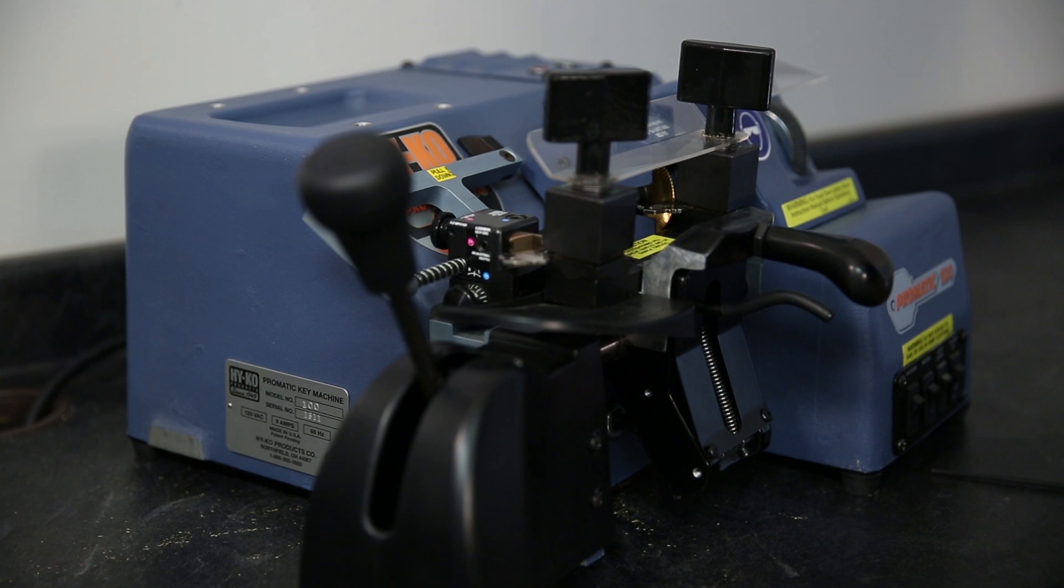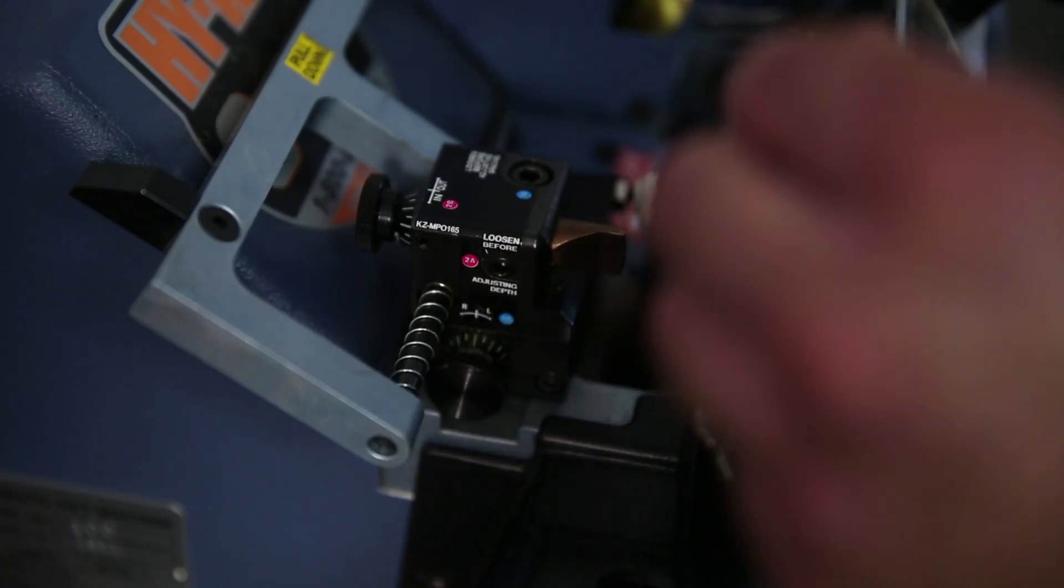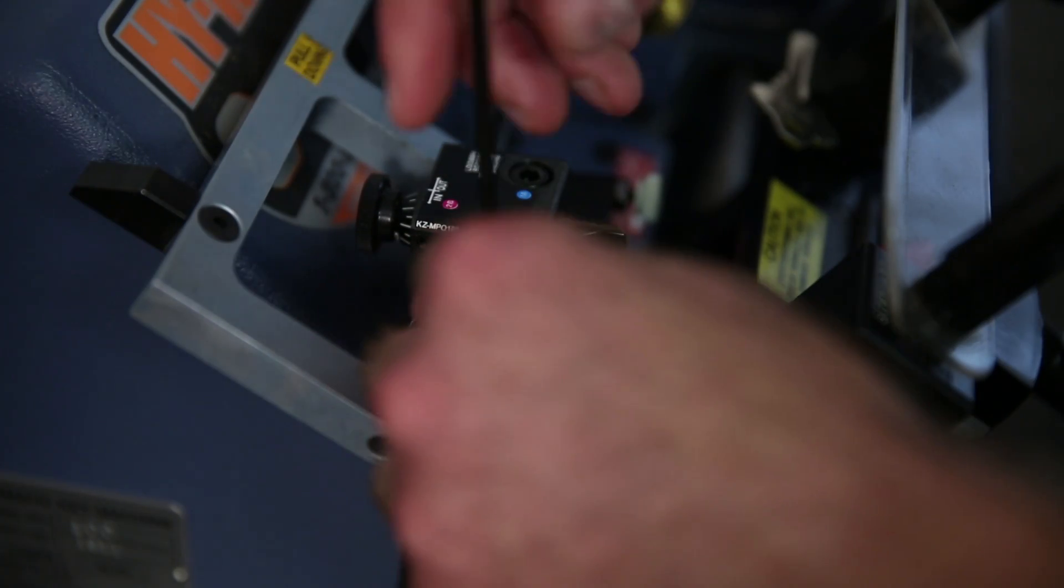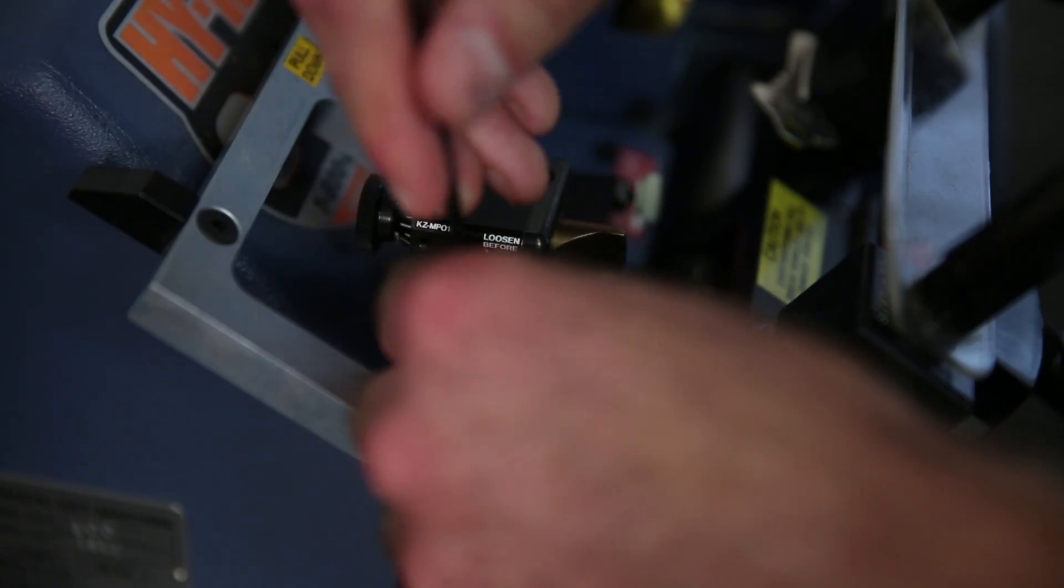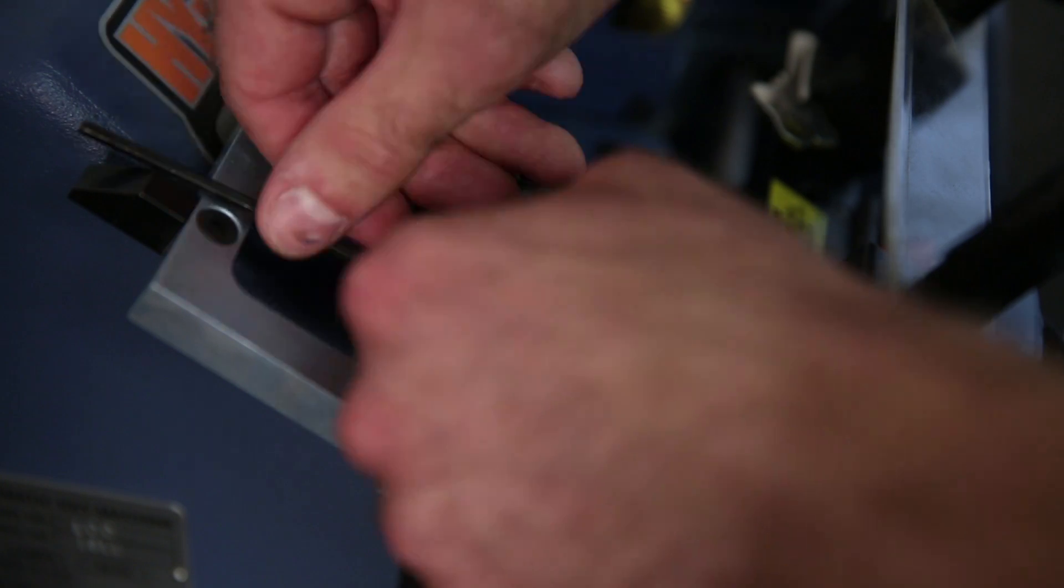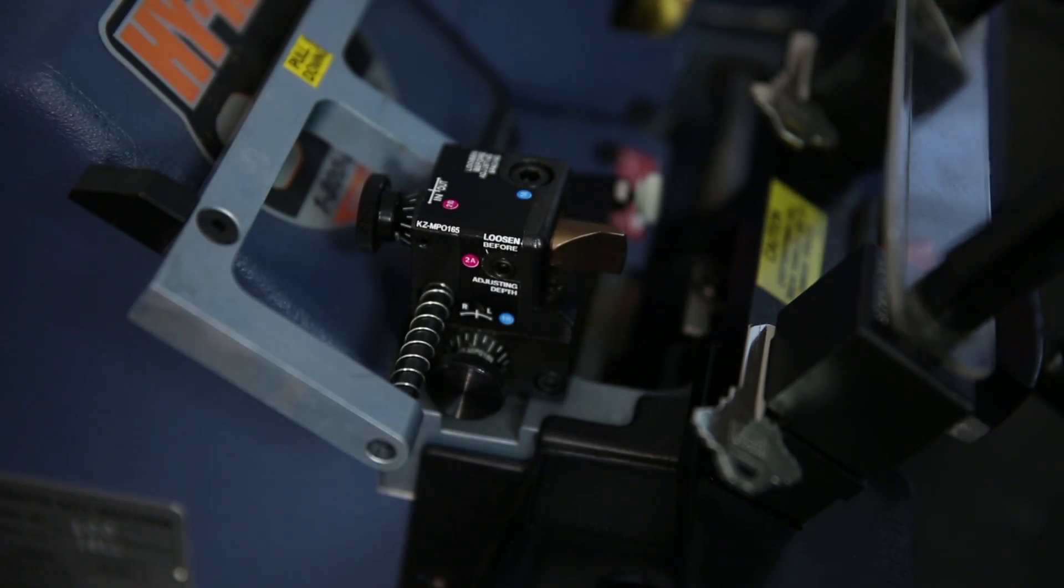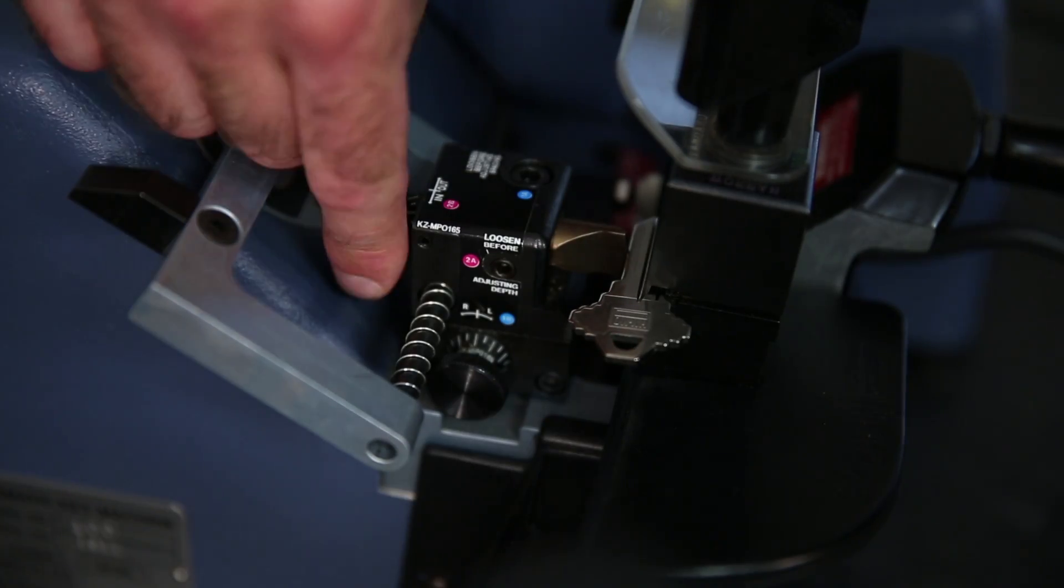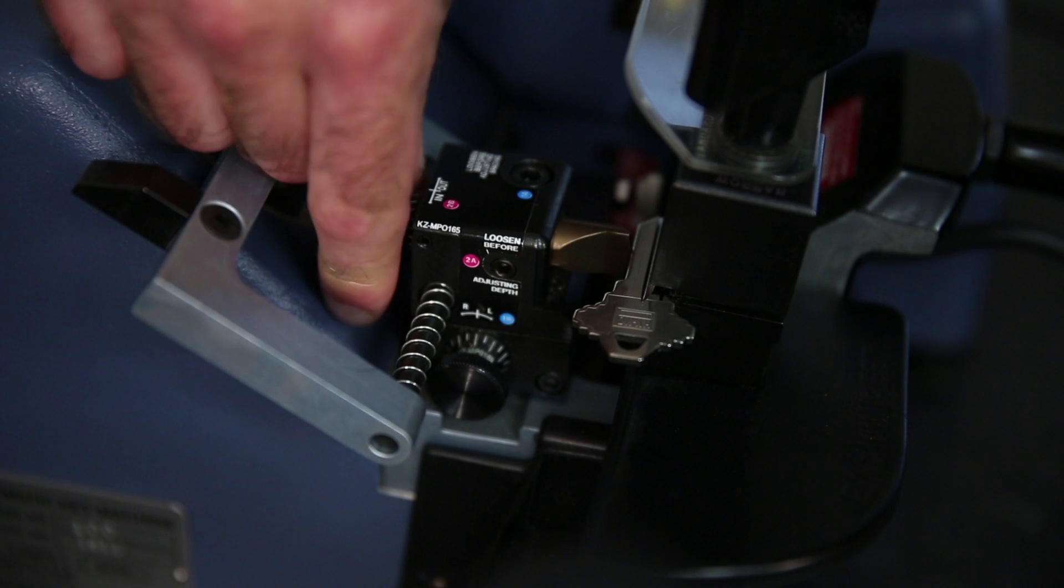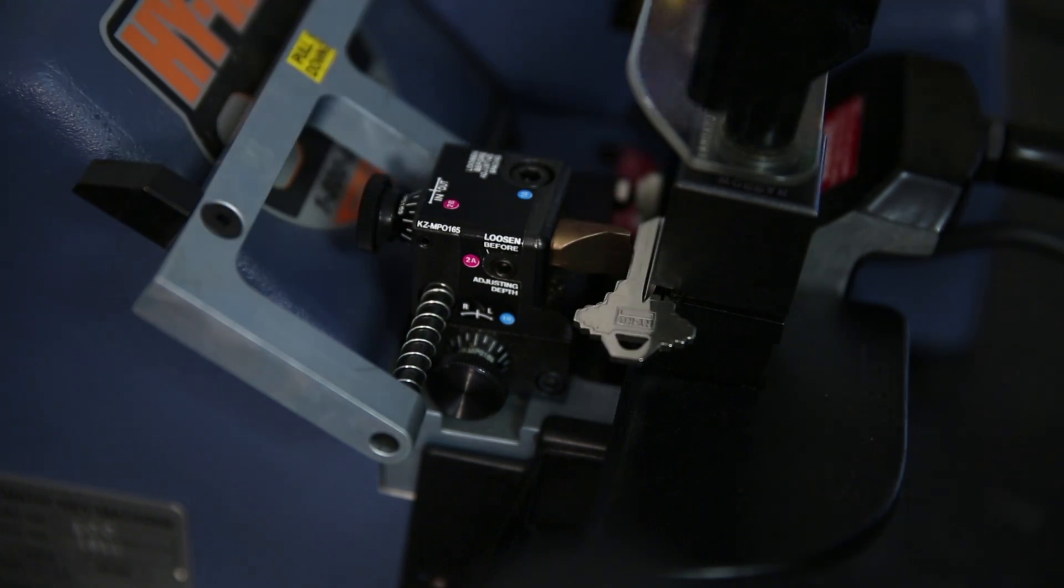Adjusting and setting the depth can be done quickly following these steps. First, loosen the locking screw on the left side of the tracer block. Next, turn the adjusting knob at the rear of the tracer block assembly to the out direction. This will push the tracer outwards. Continue to push the tracer outwards until a small gap is seen between the cutter and the key in the right jaw.